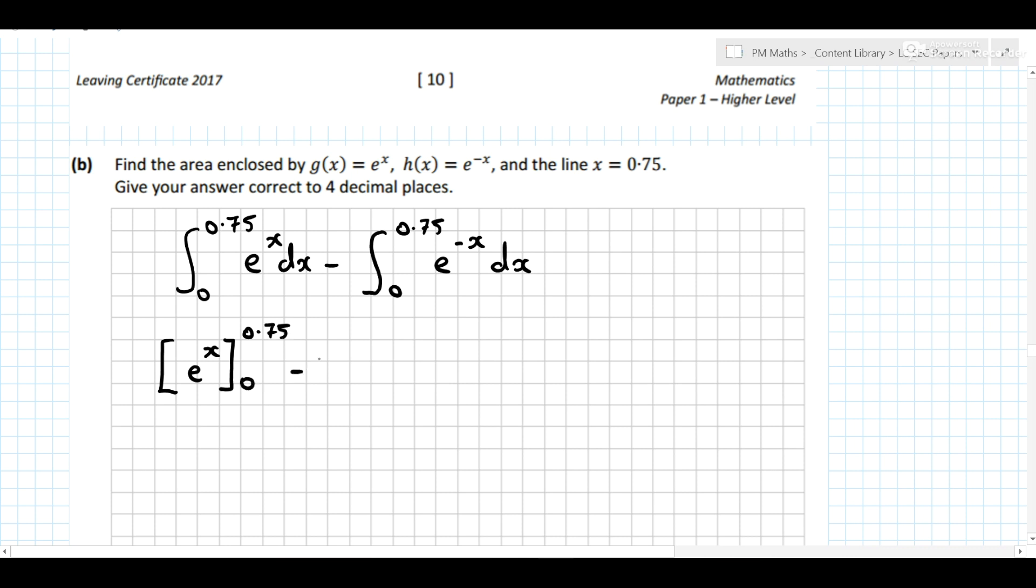We've got our minus from here, and now the integral of e^(-x)—your log tables says to integrate it. If it was e^(ax), the integral of that is 1 over a times e^(ax).